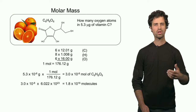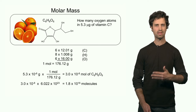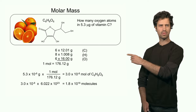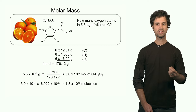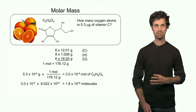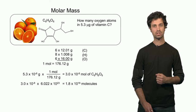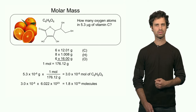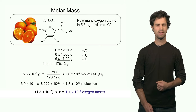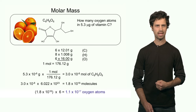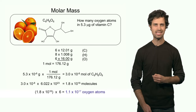Now I know how many moles of molecules I have, but I want to know how many molecules I actually have. I multiply 3.0 times 10 to the minus 8 by Avogadro's number — 6.022 times 10 to the 23rd — which gives 1.8 times 10 to the 16 molecules. The last step is to determine how many oxygen atoms I have. Since each molecule has 6 oxygen atoms, 6 times the number of molecules gives 1.1 times 10 to the 17 oxygen atoms.